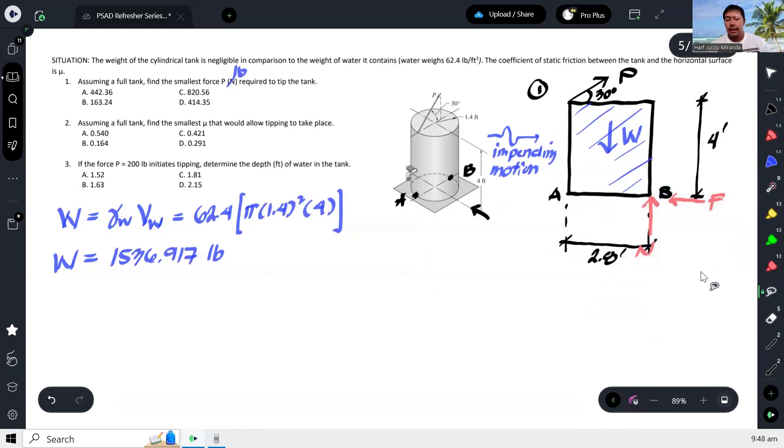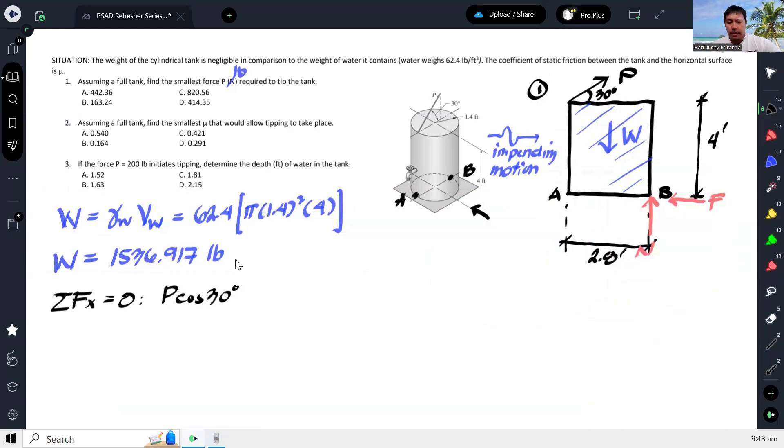So that's why I identified that the friction will be pointing to the left and then this is our normal reaction. And then alam natin that this could move somewhere, but because we are at the verge of tipping, edi ito ilalagay natin dito sa point B. The normal force will be acting directly at point B at the verge of tipping. So anyway, what I would do - we can take summation of forces X is equal to zero. We will have P cosine 30 minus F, which is equal to zero. And then summation of forces Y is equal to zero, we will have P sine 30 minus W and then plus N.